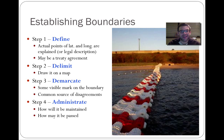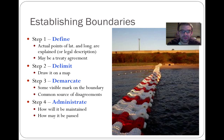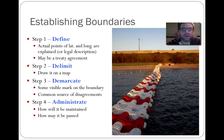To demarcate the boundaries is to have something in the physical landscape that you can actually see, establishing where the borders are. Oftentimes this is where disputes begin to emerge. Finally, to administrate is where the administration of borders tends to be an area of conflict, where actual human interaction is involved.